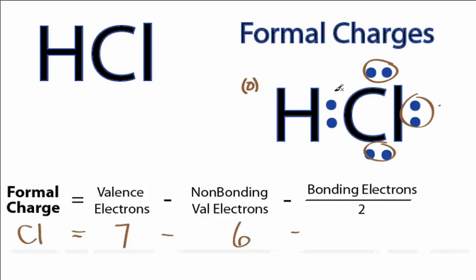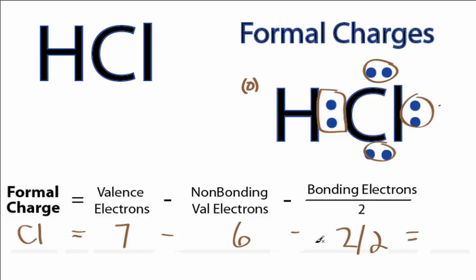And then for bonding electrons, these right here — we have two of those, but we'll divide that by two. So we have seven minus six minus one, which equals zero. So the formal charge for chlorine is also zero.